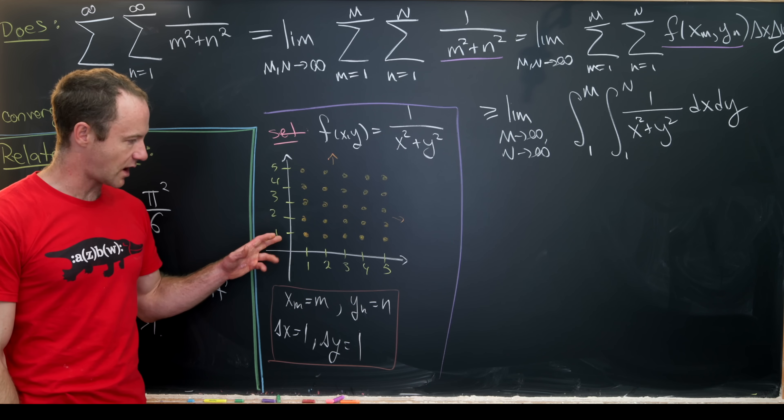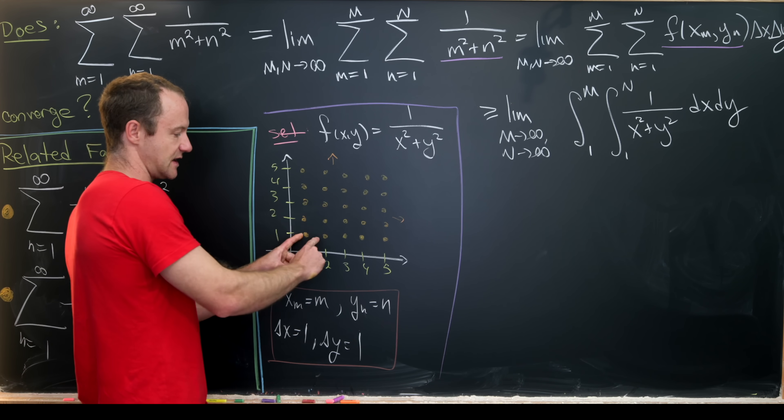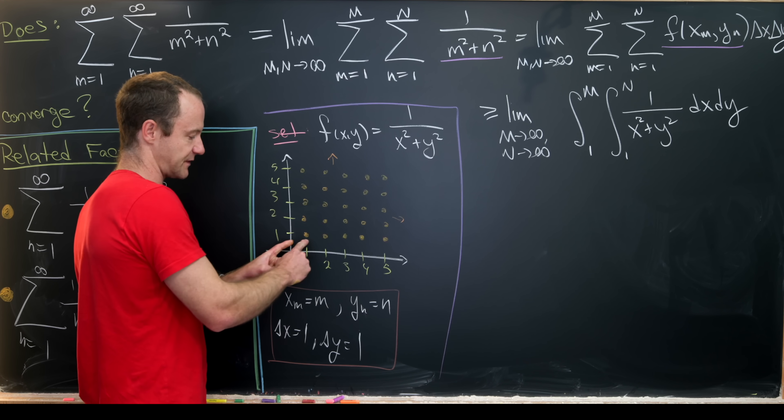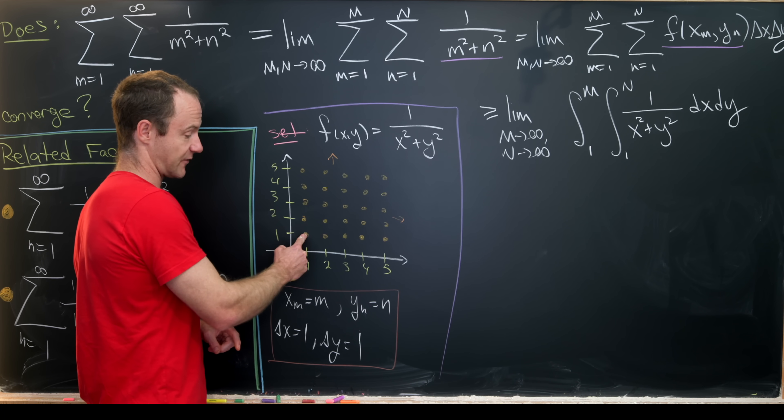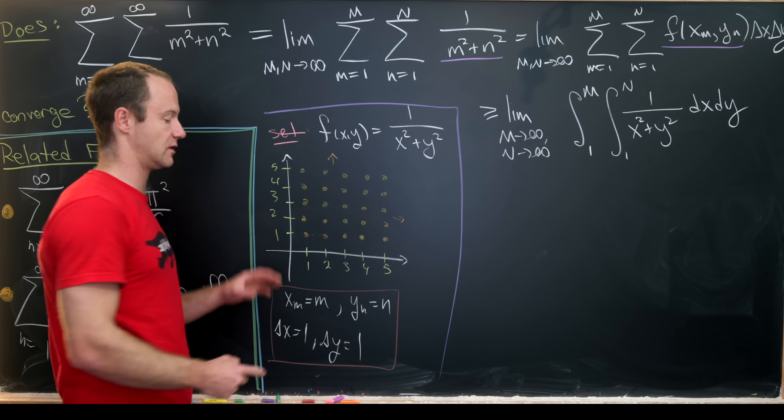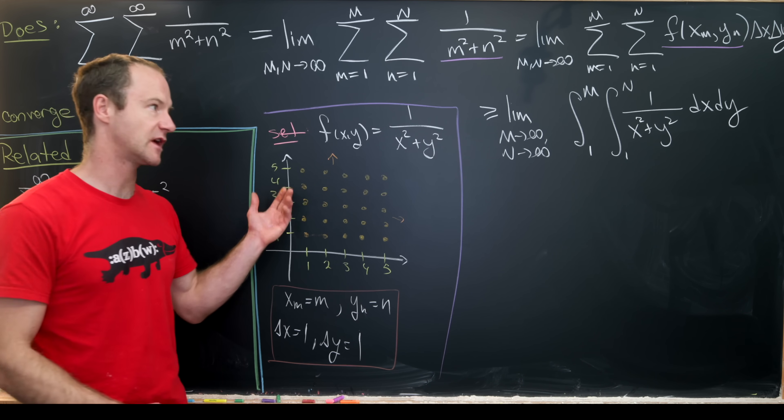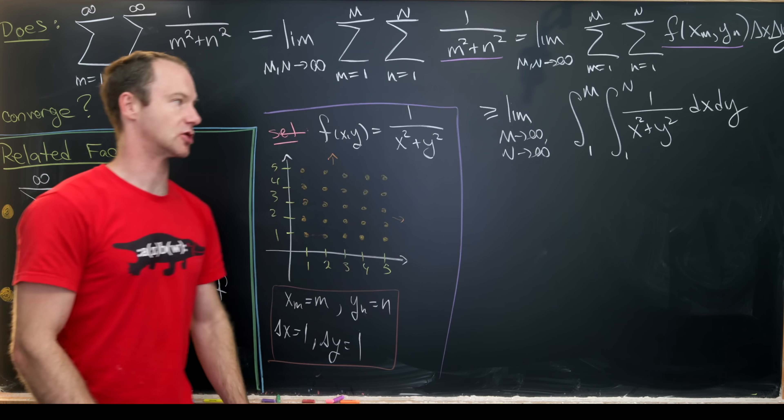And again, we know that that's an inequality because instead of taking all of the values of the function, for instance, between this lattice point and this lattice point, we're just taking this lattice point and favoring it for all of these values, this lattice point and favoring it for all of those values and so on. And that creates something larger.